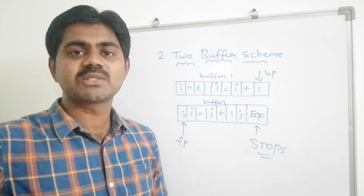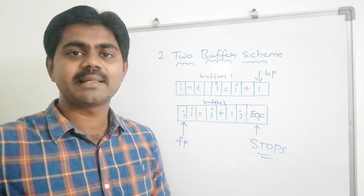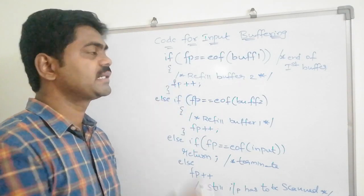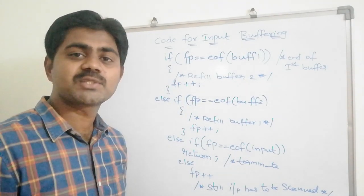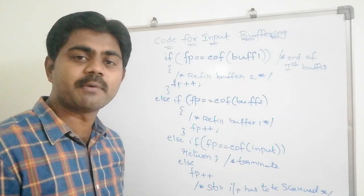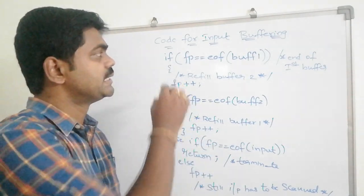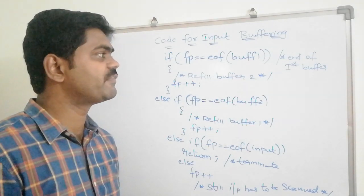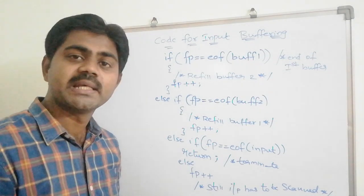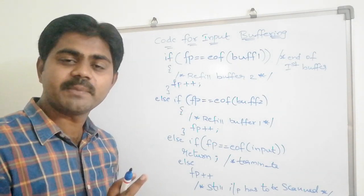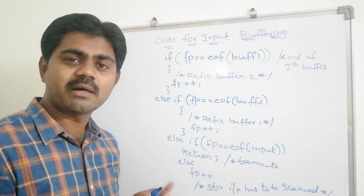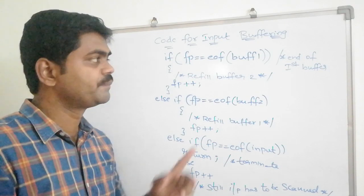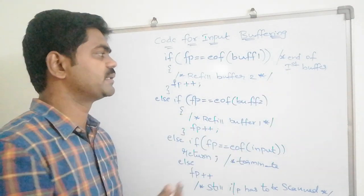We will write a pseudocode for input buffering so you get a clear idea. If the forward pointer equals EOF of buffer 1, it means we have reached the end of the first buffer.